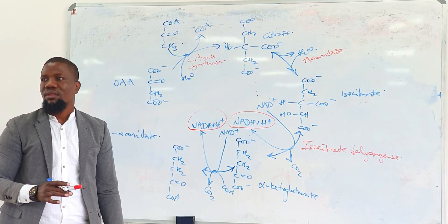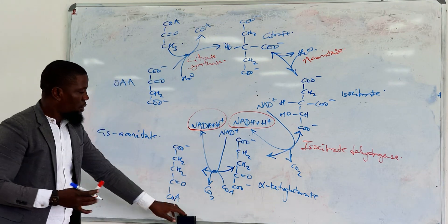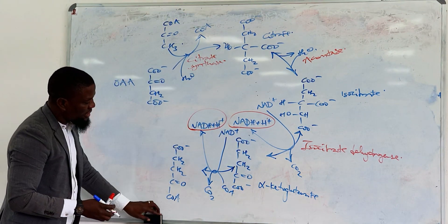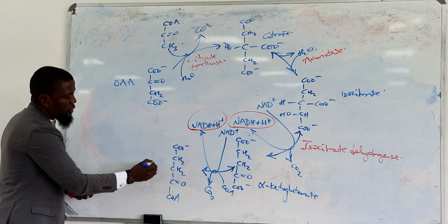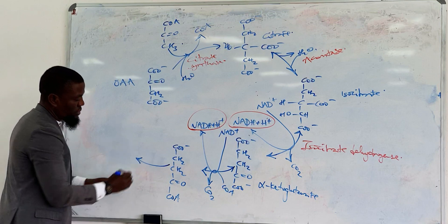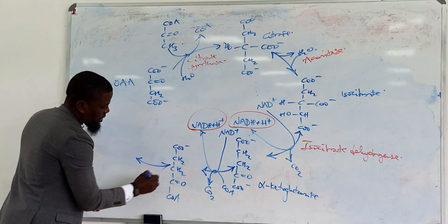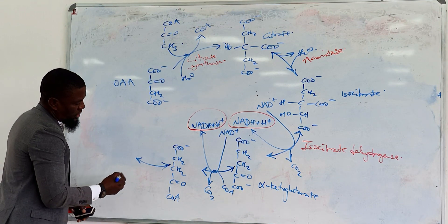This enzyme is called alpha-ketoglutarate dehydrogenase complex. It's exactly the same. It occurs similar to the pyruvate reaction. So we have the thioester succinyl-CoA produced here, and this thioester succinyl-CoA would be converted into succinate.